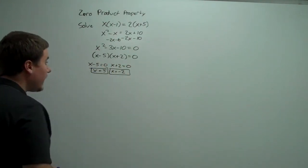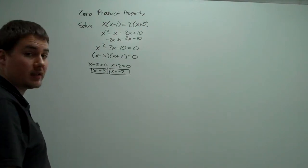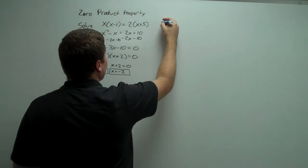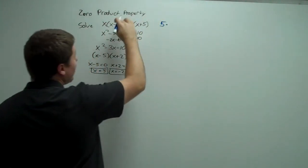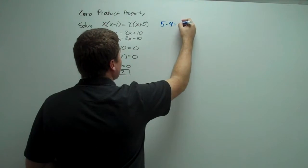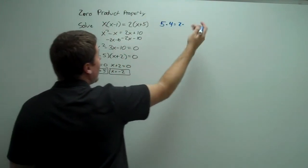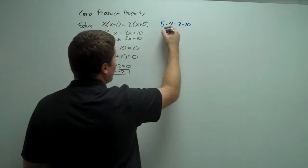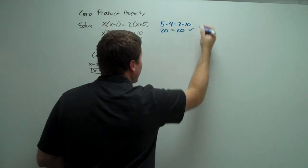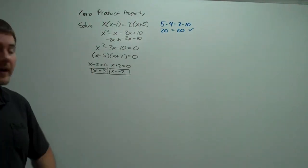I'm going to check my answers because the original form is pretty easy to check with. So 5 times 5 minus 1, which is 4, is equal to 2 times 5 plus 5, which is 10. So that's 20 equals 20. That's an equation, so indeed x equals 5 is a solution.